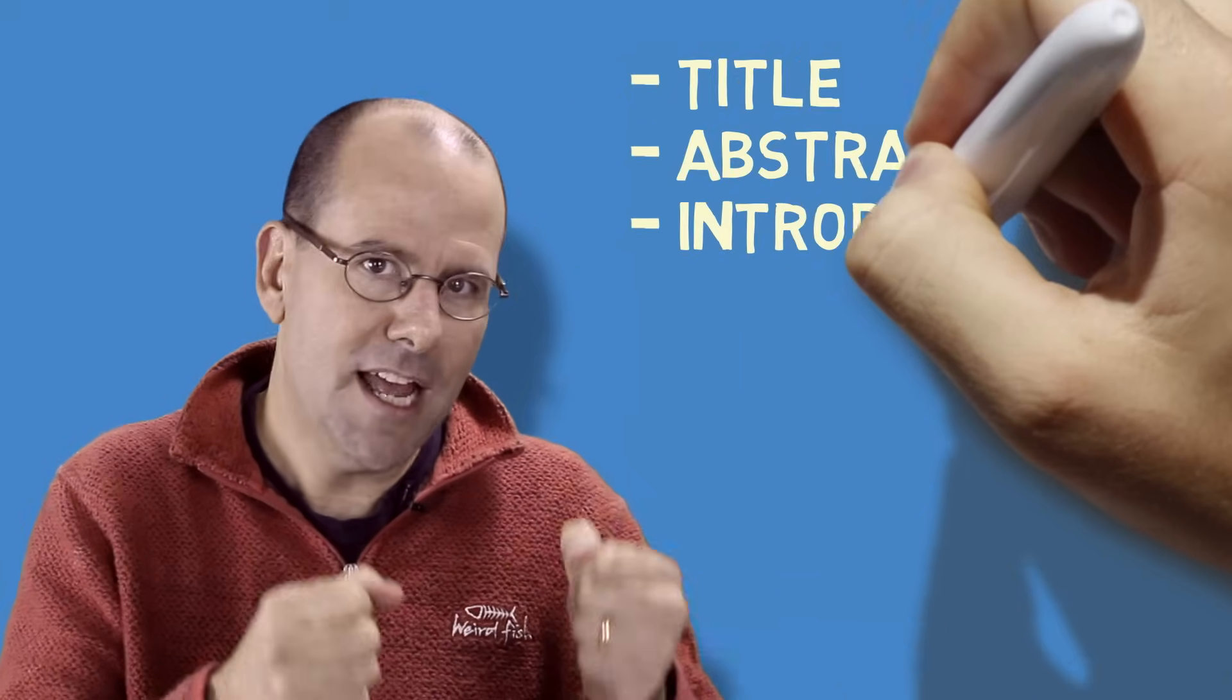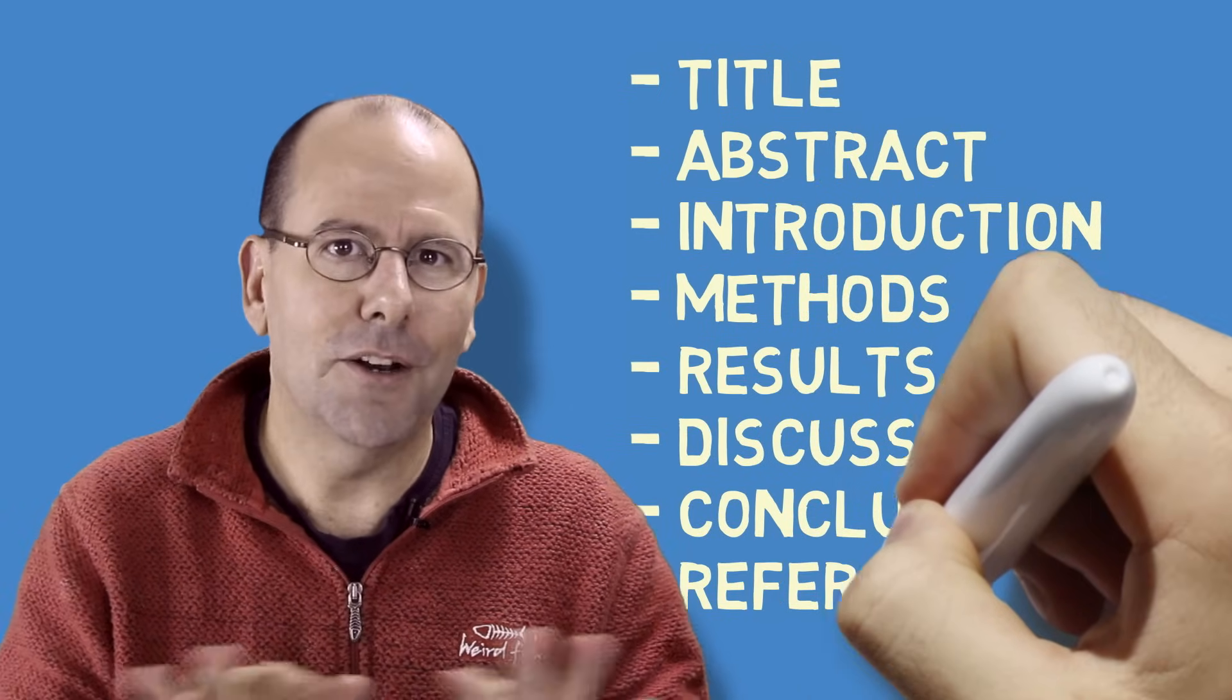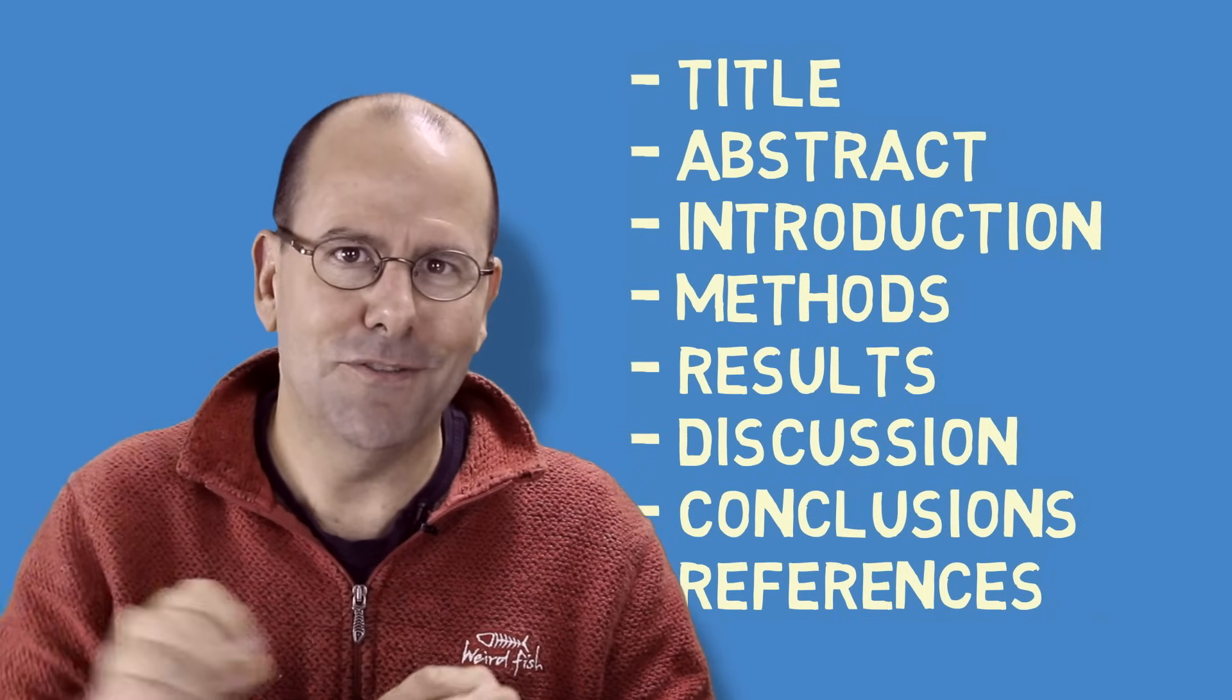Basically papers have got a number of sections. There's the title and abstract, the introduction and background, the methods, results, discussion and conclusions. I'm going to talk to you about what goes into each of those sections.